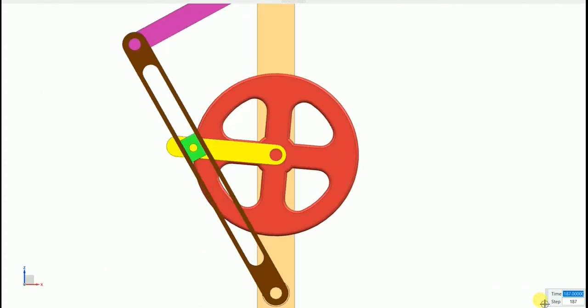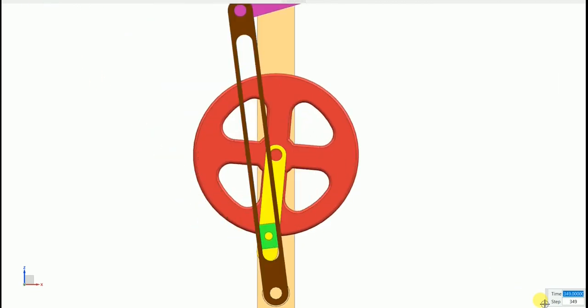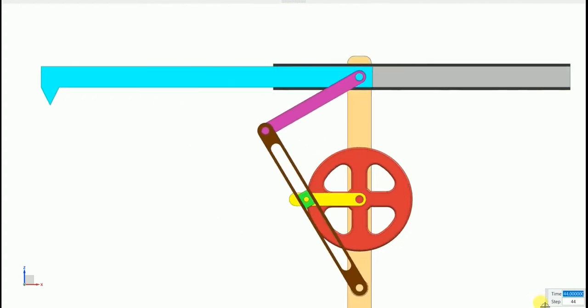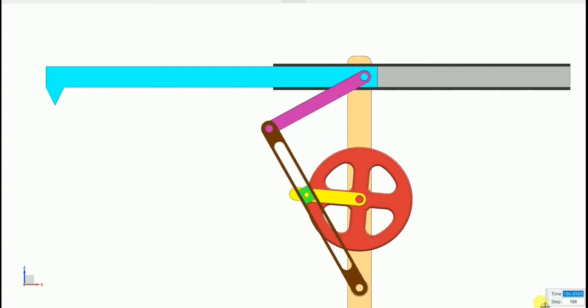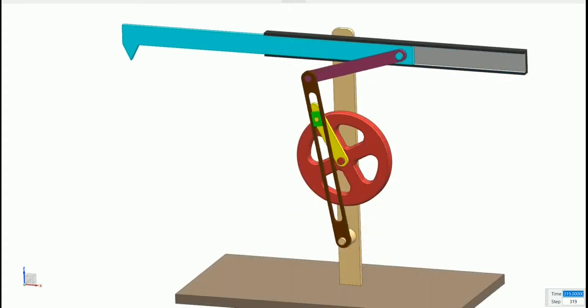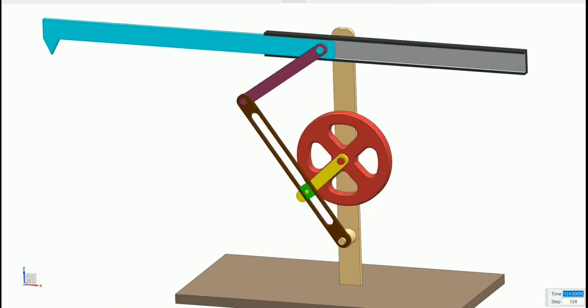As the slider moves inside the slotted bar, it provides a rocking movement to the slotted bar. And this movement is transferred to the ram providing it a reciprocatory motion. Hence the rotary motion of the crank is converted into reciprocatory motion of the ram.